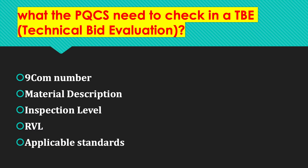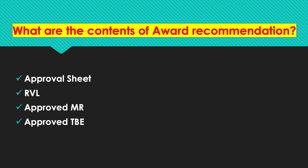What does the PQCS need to check in a TBE or technical bid evaluation? The PQCS should check that the 9COM number is correct, material description is full and correct, inspection level is right, the regulated vendor list related to the material is attached, and applicable standards are included. What are the contents of an award recommendation? Approval sheet, regulated vendor list, approved material requisition, and approved technical bid evaluation.